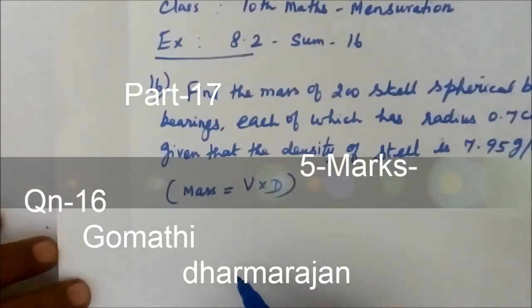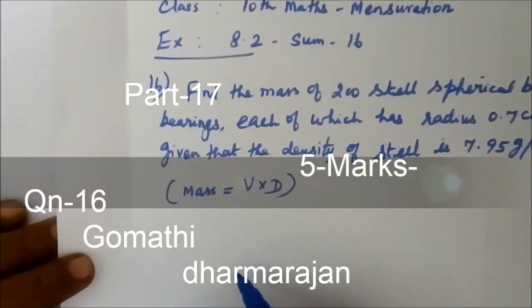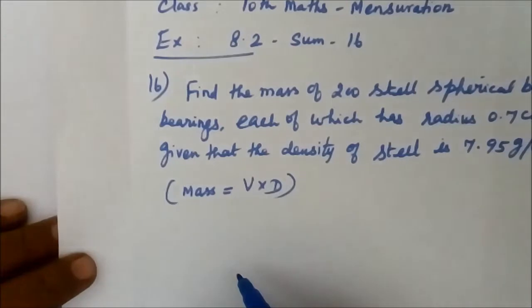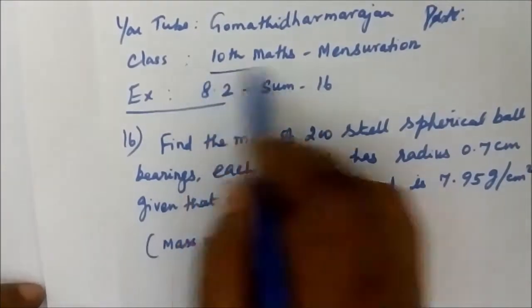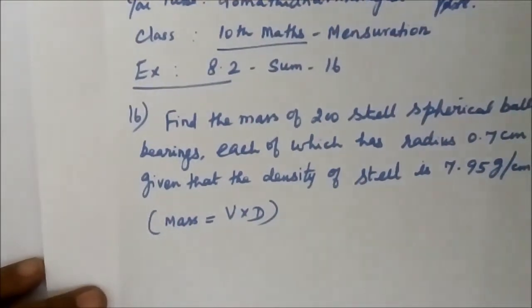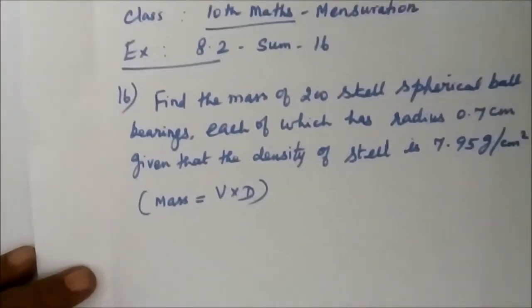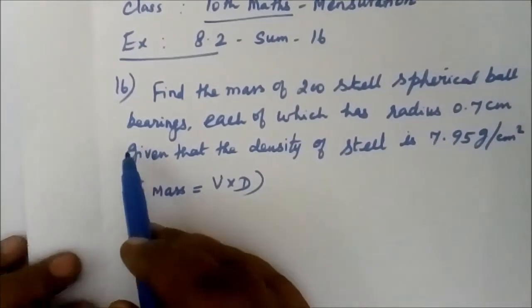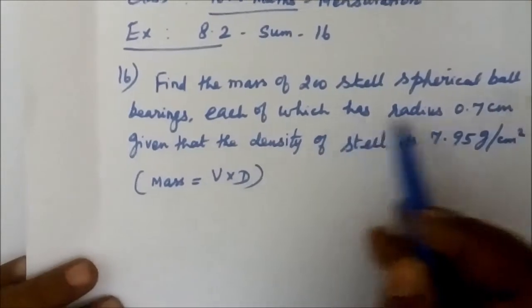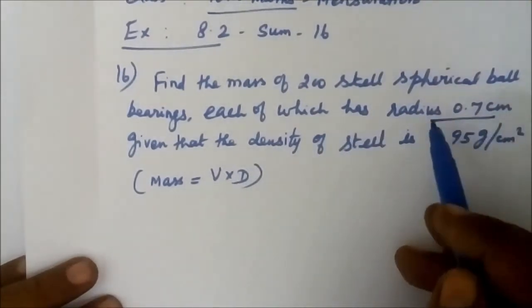Good evening students. Now we see question number 16 in exercise 8.2, and this is for 10th standard maths mensuration. Find the mass of 200 spherical ball bearings, each of which has radius 0.7 cm.